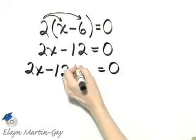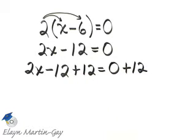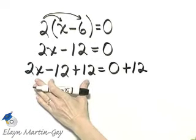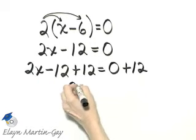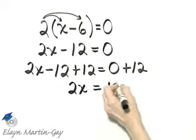And what I will do now is I will add 12 on the left side, and then I must also add 12 on the right side. And notice what happens. The left side then simplifies to just 2x like we want. The right side, 0 plus 12, is 12.